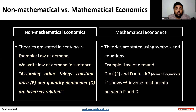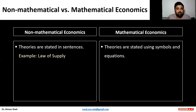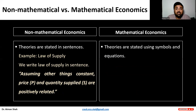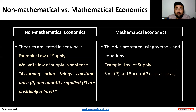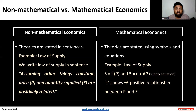Mathematical economics is just an approach to analyze economic theories. Let's take another example — the law of supply. Assuming other things constant, we have a positive relationship between price and quantity supplied. We use symbols and equations to explain this theory. The supply equation is S = C + D × P. The positive sign shows the positive relationship between price and quantity supplied.